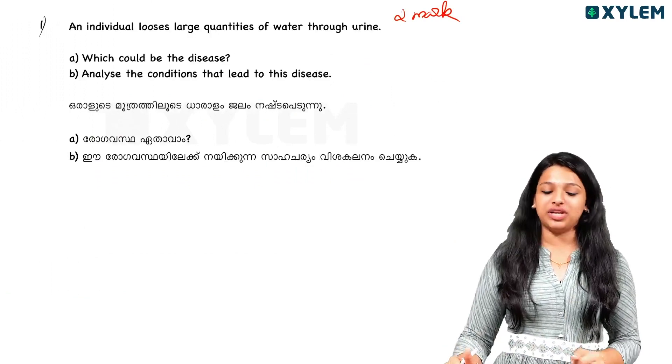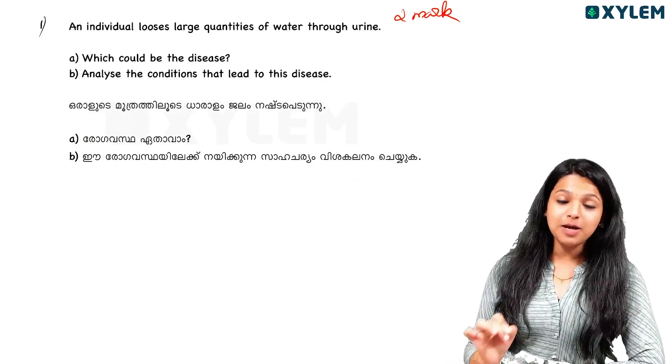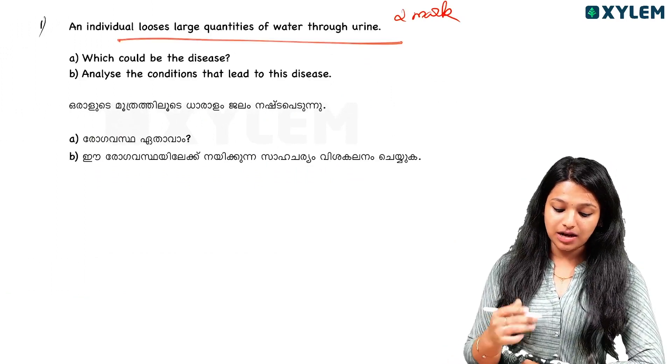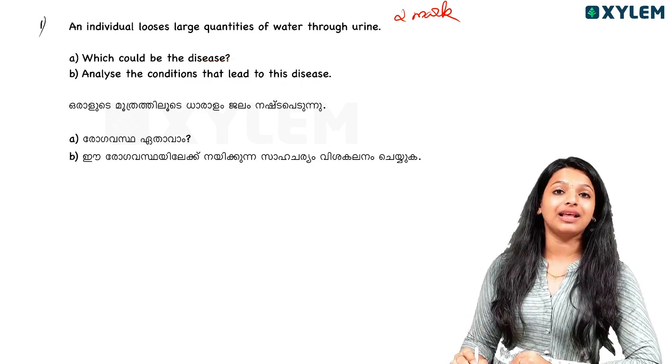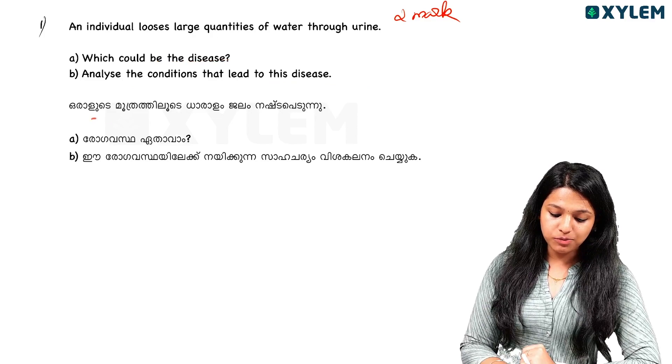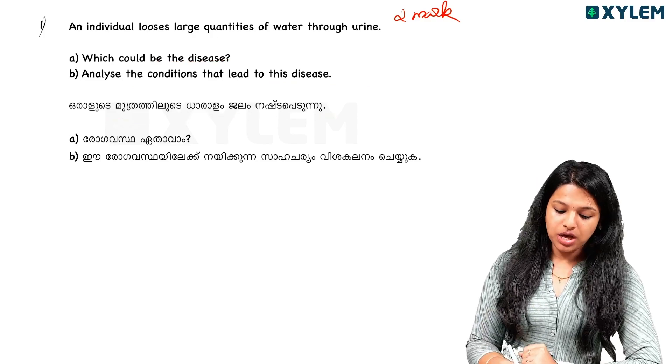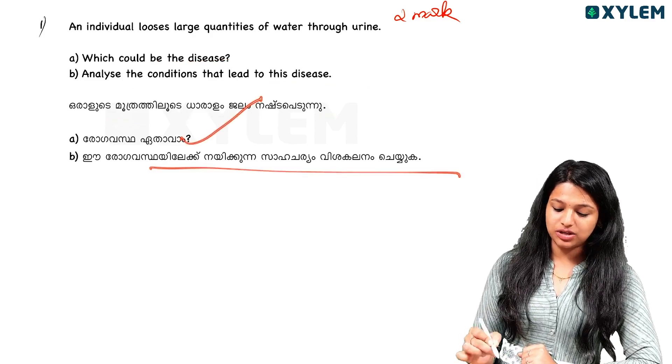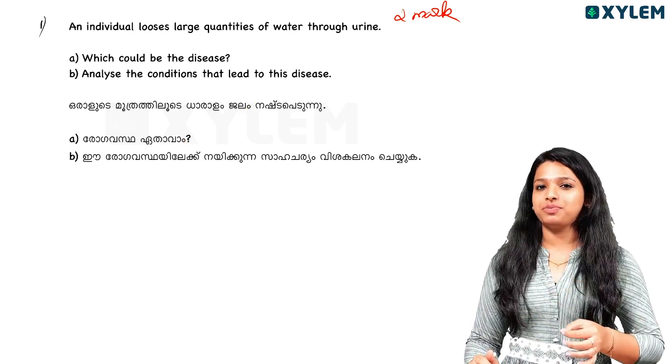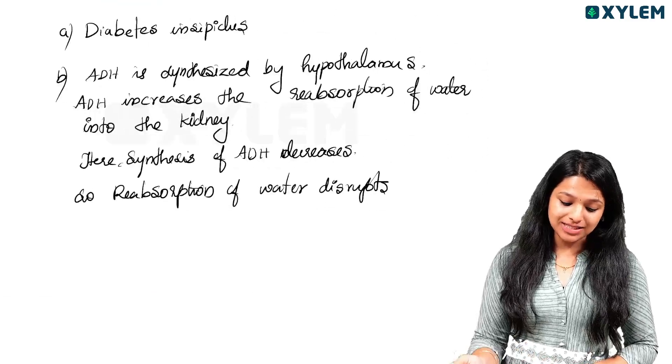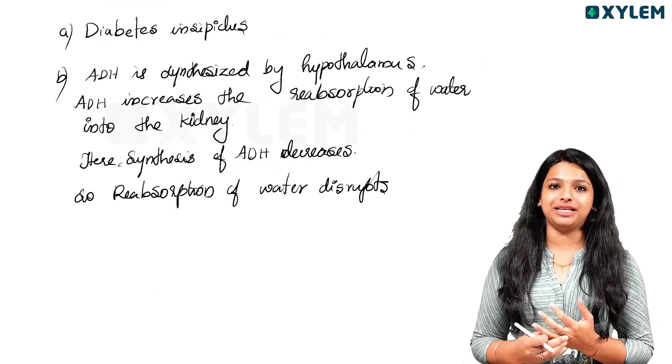What is the first question? Question 2: An individual loses large quantities of water through urine, which could be the disease. Analyze the condition that leads to disease. One person, an individual has this disease. What's the disease? If you have a lot of pain and hormones, this is called Diabetes Insipidus.